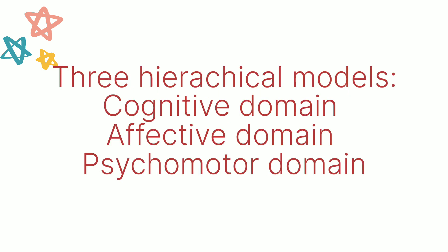There are three hierarchical models. Number one is the cognitive domain. Number two is the affective domain. Number three is the psychomotor domain. We will elaborate all these three domains one by one.